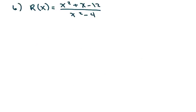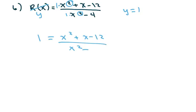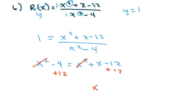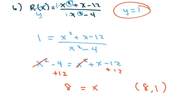The next one: again the degrees are the same and the leading coefficient is 1 divided by 1 equals 1, so the horizontal asymptote is y equals 1. Cross multiplying gives x squared minus 4 equals x squared plus x minus 12. The x squared terms cancel. Adding 12 to both sides gives x equals 8. So x is 8 and y is 1; that's where the graph crosses the horizontal asymptote y equals 1.